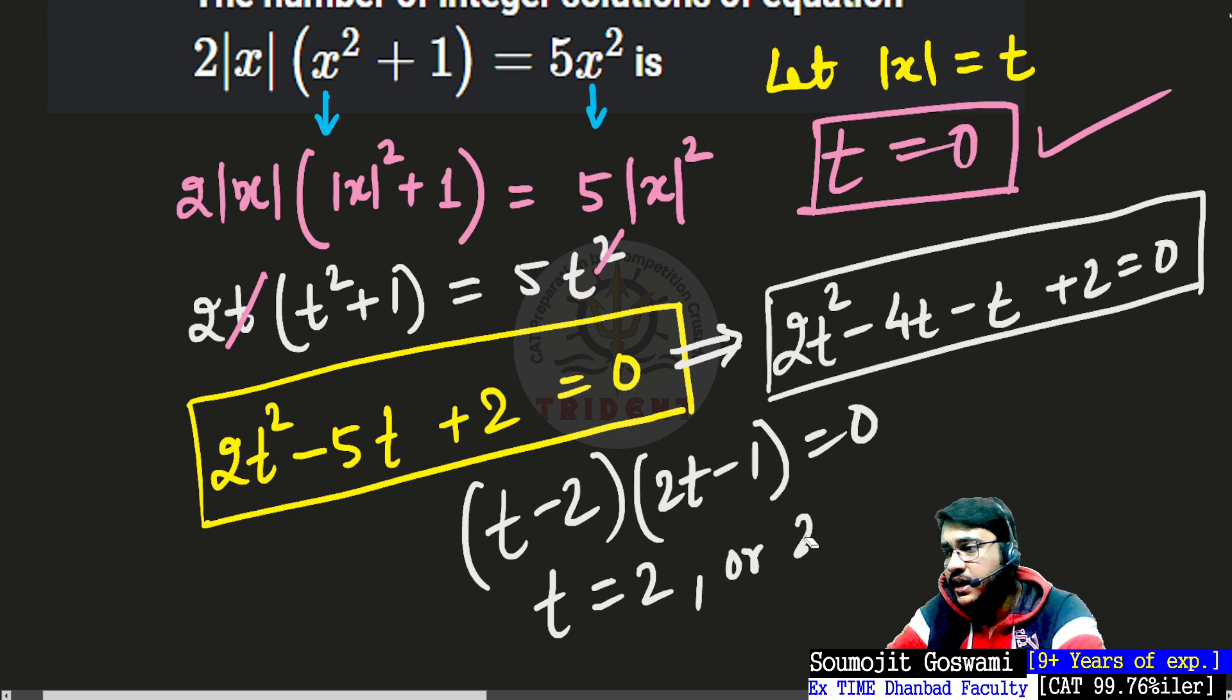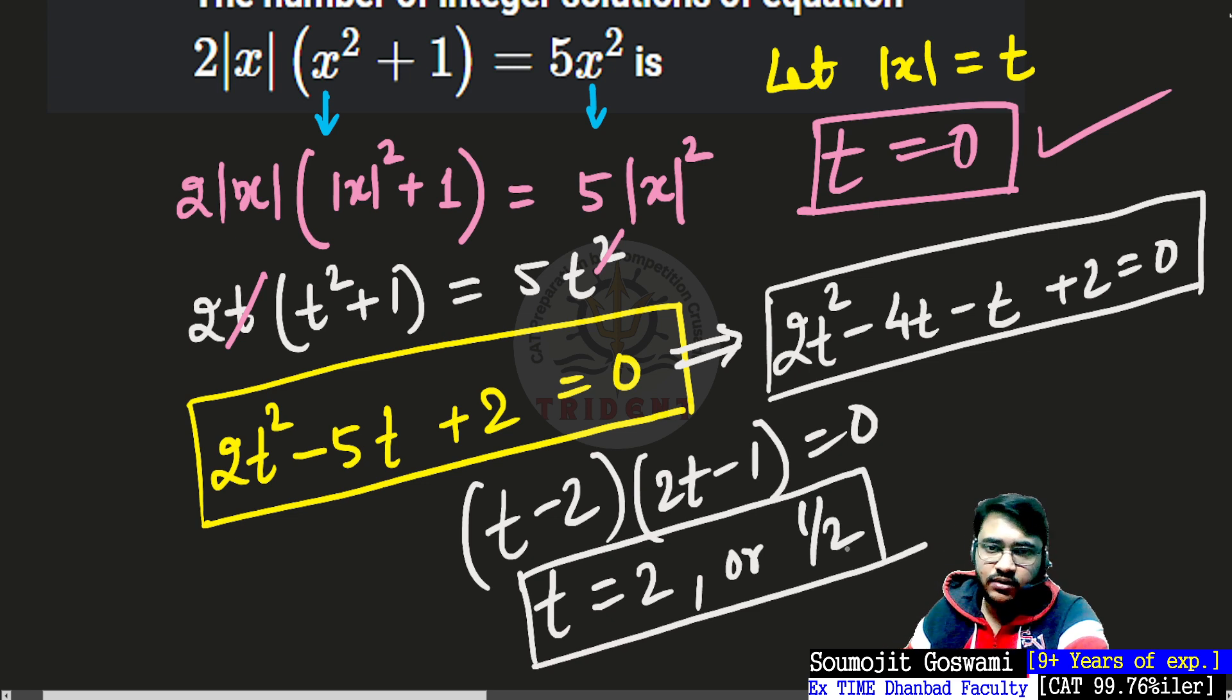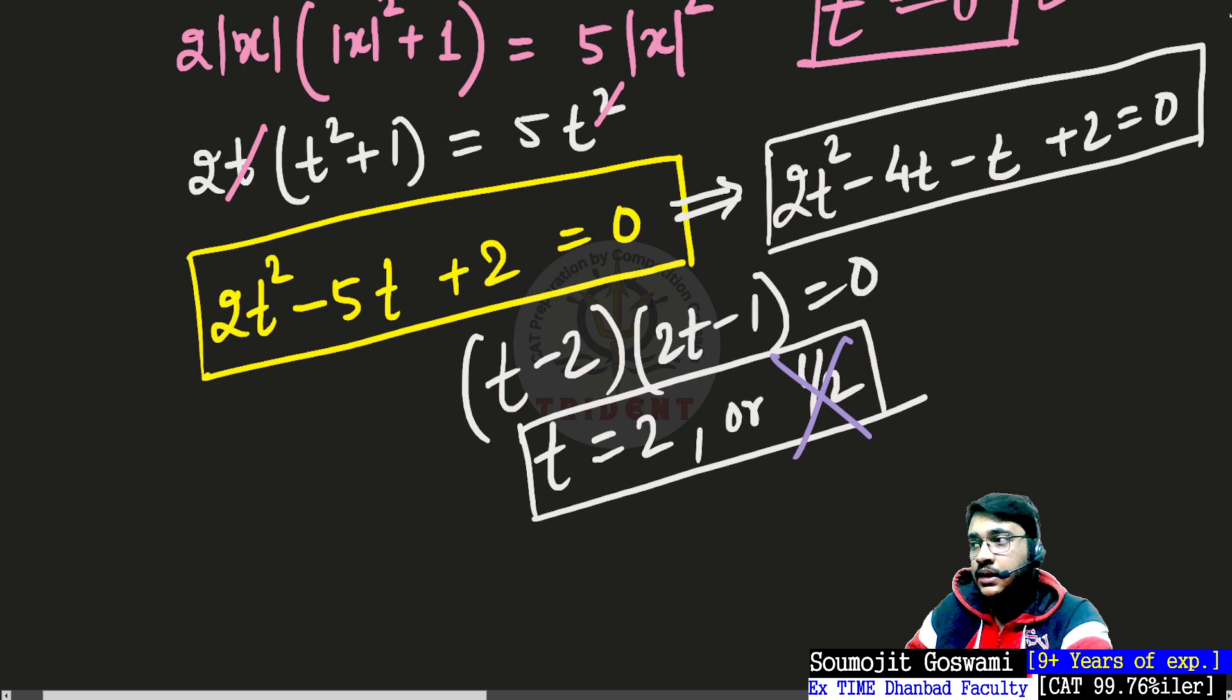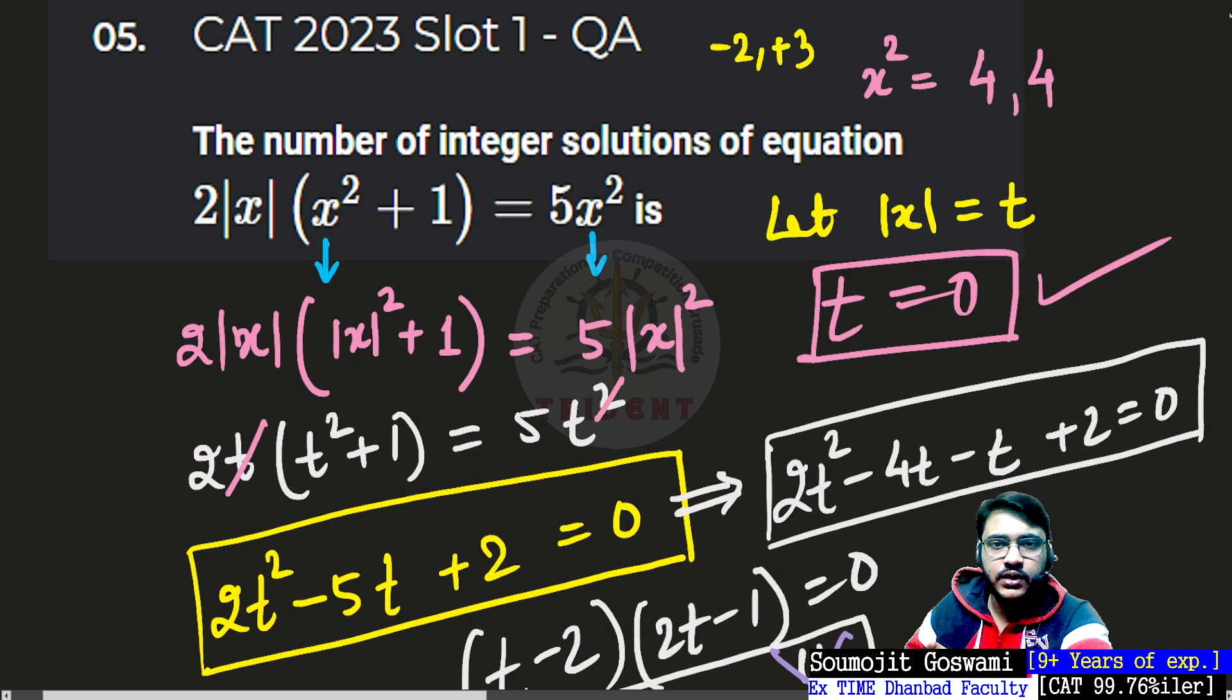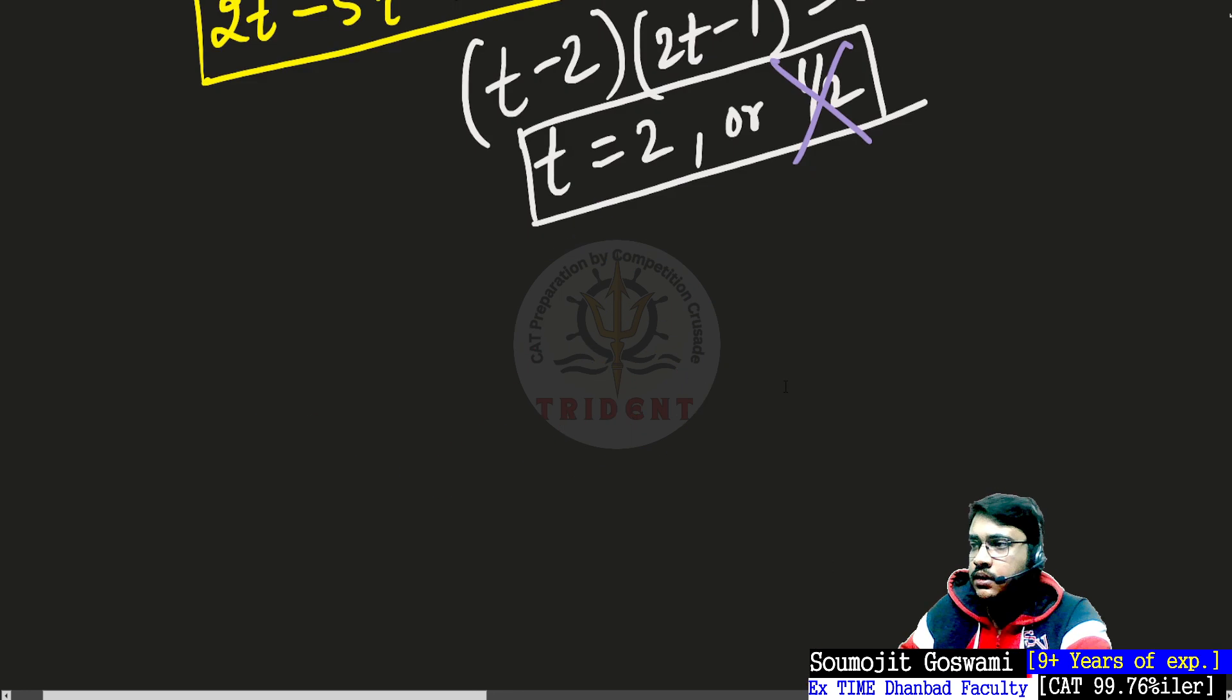Now because we were looking out for integral values, I am going to be neglecting this value of half because we are looking at integer solutions. How many solutions do I have? Two solutions: one zero over here and one two over here.